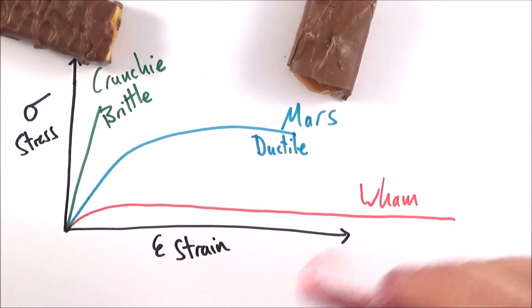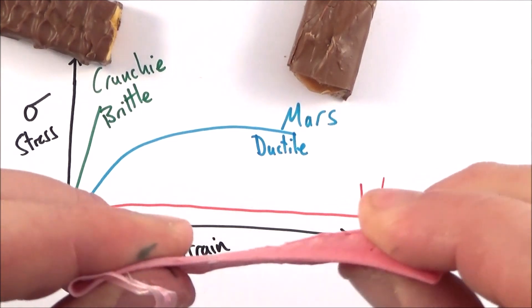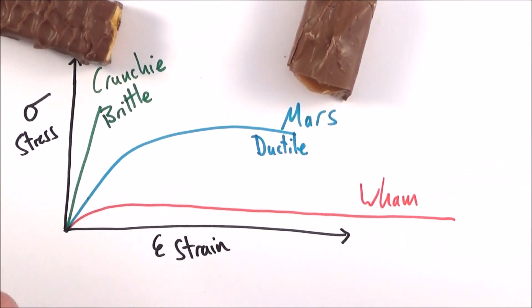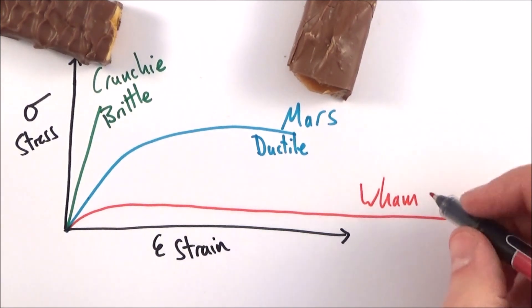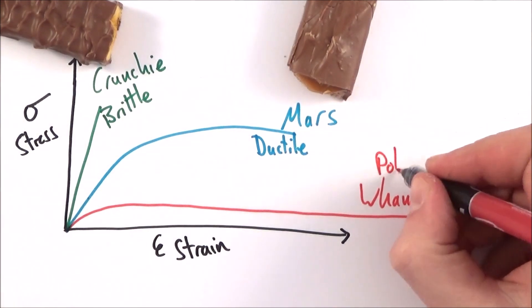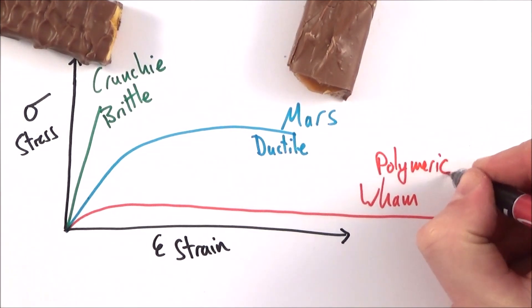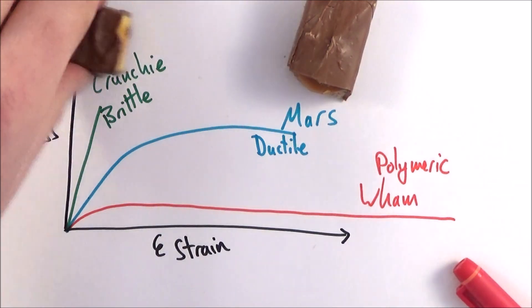When it comes to looking at things like the Wham bar, well, it's something which has a very kind of great, a really massive strain. And this is where we have things like polymers, so things like plastics or some kinds of plastics. And this is what we call polymeric. So there we go.